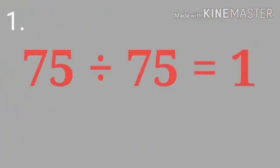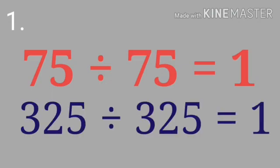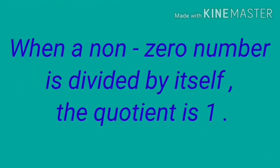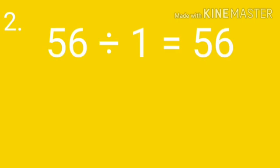If we divide 75 by 75, the quotient we get is 1. Similarly, if we take 325 divided by 325, the quotient is also 1. So our first property states: when a non-zero number is divided by itself, the quotient is 1.